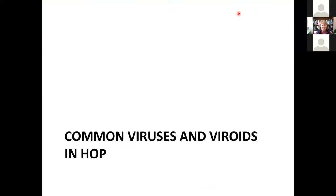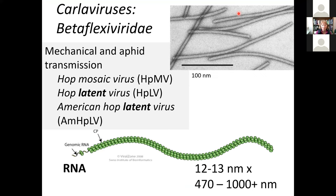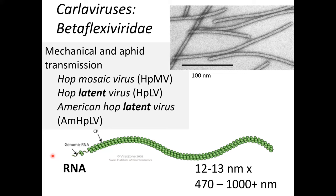I'm going to start by reminding all of us about some of the common viruses and viroids in hop. One of the big groups important in our hop environment are called Carla viruses, in the family Betaflexiviridae. These are very long, thin structures — a lot of proteins make this long tube and inside the tube is the genomic RNA. We've all become a lot more familiar with viruses after being locked down during the pandemic focused on SARS-CoV-2, and there's quite a plethora of other viruses out there, including the ones in our hops.